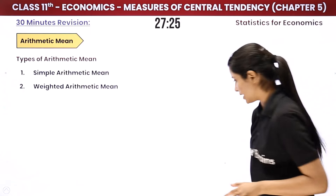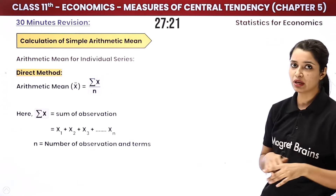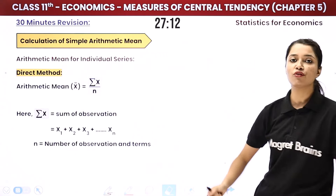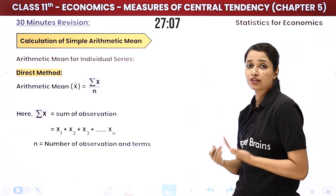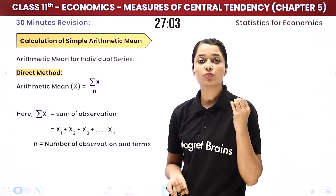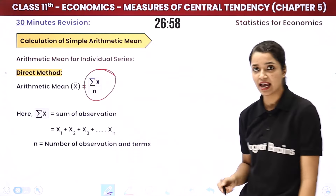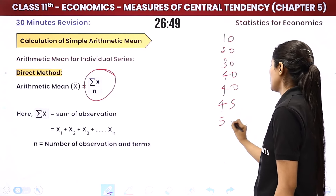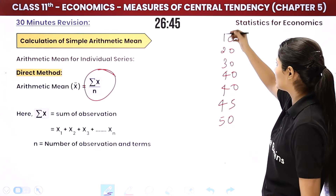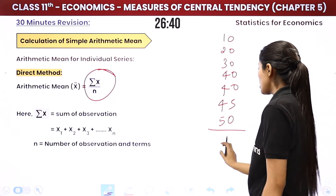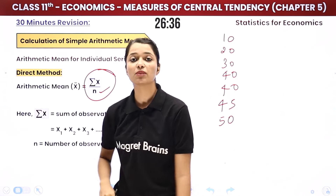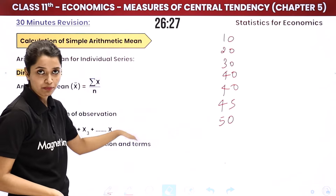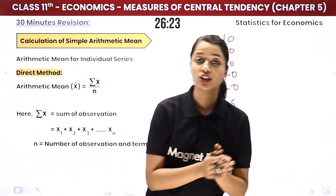Now the calculation of simple arithmetic mean — we will see various series: individual, discrete, and continuous series. Individual series is where all numbers are individually written, like 1, 2, 3, 4. The mean for individual series is very easy: simply do Summation of X divided by N. For example, if we have numbers 10, 20, 30, 40, 45, and 50 — you add all these values and divide by N, the number of observations, which is 7. This gives you your simple arithmetic mean under individual series.